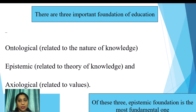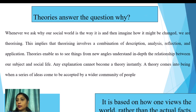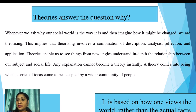The explanation of a phenomenon leads to another significant attribute of knowledge — theory. Theory answers the question 'why.' When we ask why our social world is the way it is and imagine how it might be changed, we are theorizing. This involves a combination of description, reflection, and application. Theories enable us to see things from new angles and understand relationships between our subject and social life. A theory comes into being when a series of ideas is accepted by a wider community — it is based on how one views the world rather than actual facts.